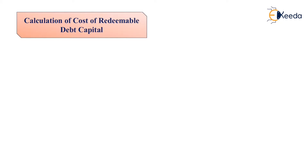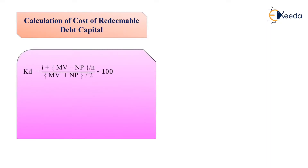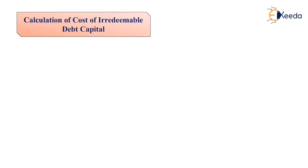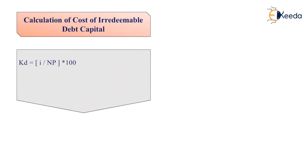For calculation of cost of redeemable debenture capital, the direct formula is: Kd equals (I + (MV - NP) / n) / ((MV + NP) / 2), where I is interest, MV is maturity value (the amount received after the maturity period, say 20 years), NP is net proceeds, and n is number of years to maturity.